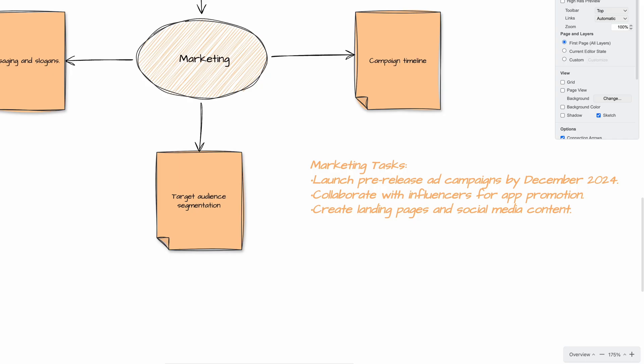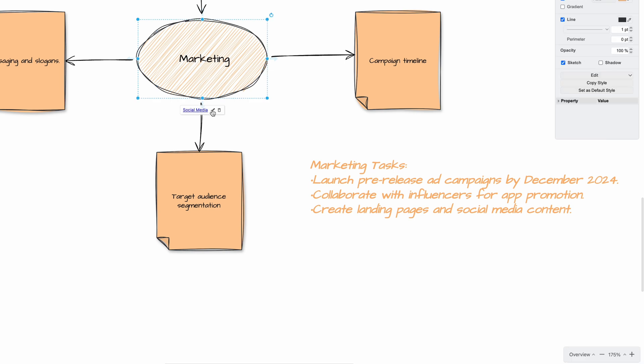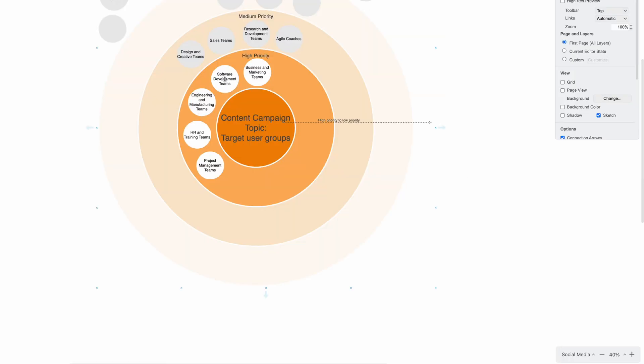This allows team members to easily access and review the information during your brainstorming session. If your brainstorming session covers multiple topics, you can create separate pages within the same Draw.io diagram for each topic — for example, one page for social media, another for content creation, or another for SEO tactics. Use shapes to link to these pages so that team members can easily navigate directly to the section they need. By utilizing the pages and links features in Draw.io, your team members can quickly access all the necessary information, navigate through different topics easily, and gain a richer understanding of the discussed ideas.